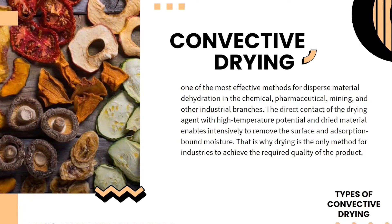Next is convective drying, one of the most effective methods for dispersed material dehydration in the chemical, pharmaceutical, mining, and other industrial branches. The direct contact of the drying agent with high-temperature potential and dried material enables intensive removal of surface and absorption-bound moisture. That is why drying is the only method for industries to achieve the required product quality. The following slides present the types of convective drying.